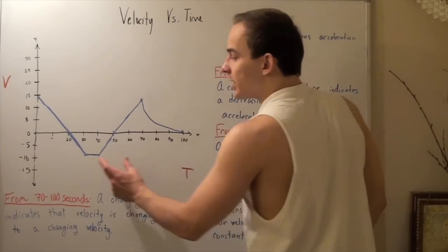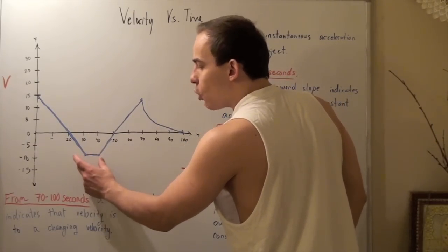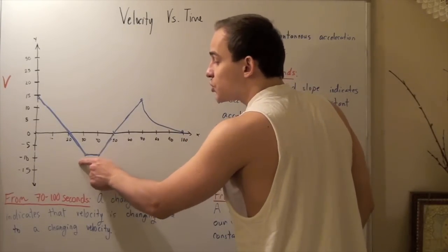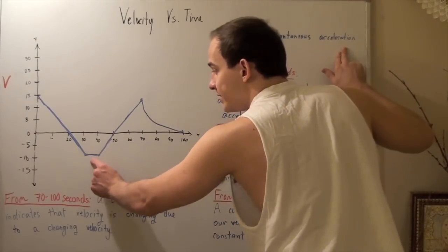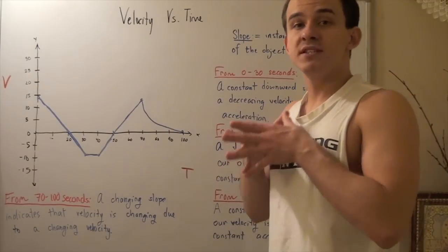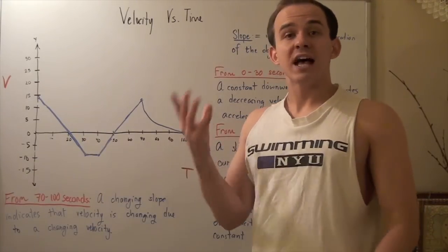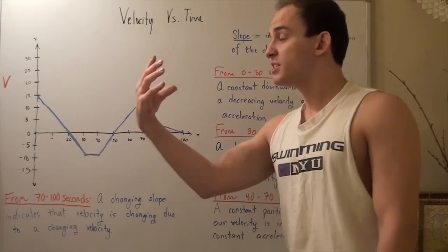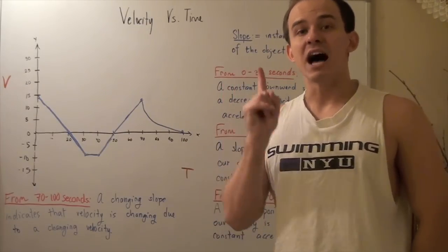From 30 seconds to approximately 40 seconds, our slope is zero — a constant but zero slope. A zero slope means our instantaneous acceleration at any point in this time interval is zero, so our velocity is not changing. That doesn't mean our velocity is zero; we still have a negative velocity, meaning we're still moving in the negative direction, but with constant velocity.